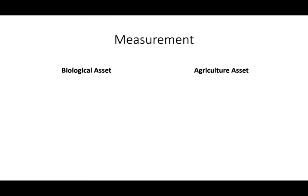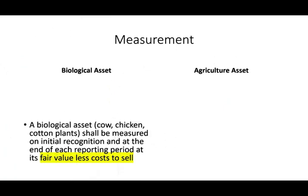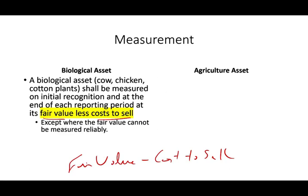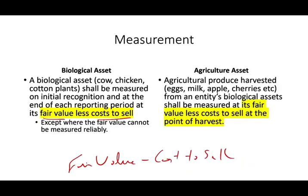Measurement: biological assets — cow, chicken, cotton plants — shall be measured on initial recognition and at the end of each reporting period at fair value less cost to sell. If there is no fair value, then you use cost minus accumulated depreciation minus impairment. Agricultural produce — eggs, milk, apples, cherries — harvested from the biological asset should also be reported at fair value less cost to sell at the point of harvest.